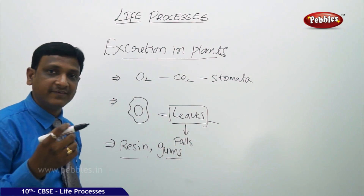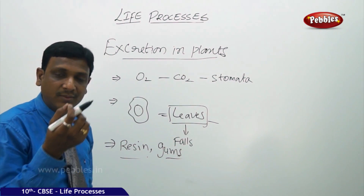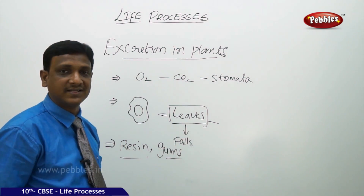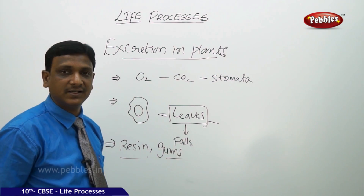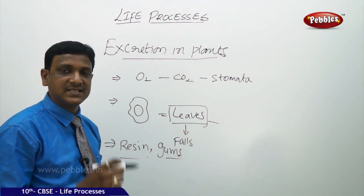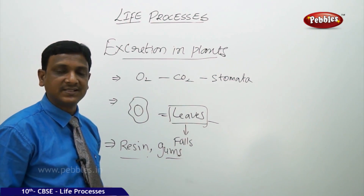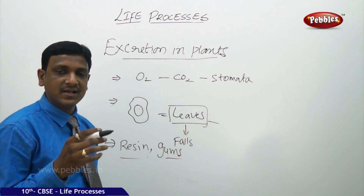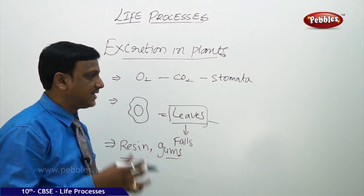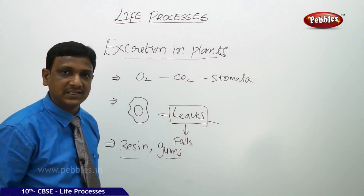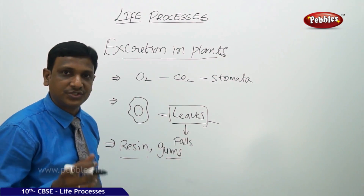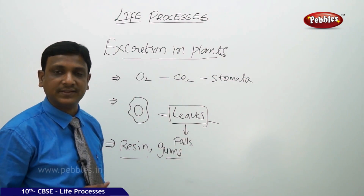Certain plants store their waste materials in the form of crystals called raphides. And it has recently been found that some plants also excrete waste materials from their roots into the soil.